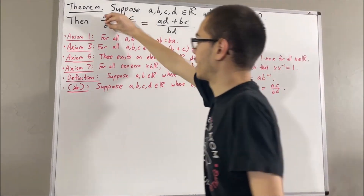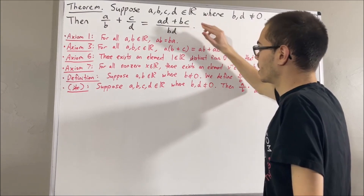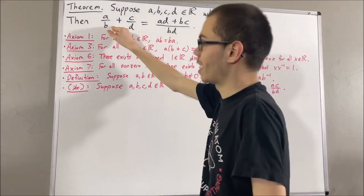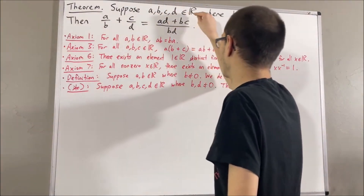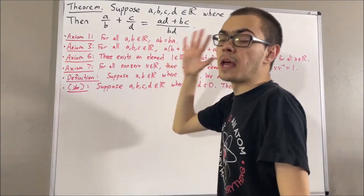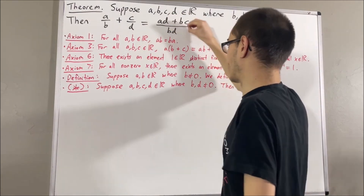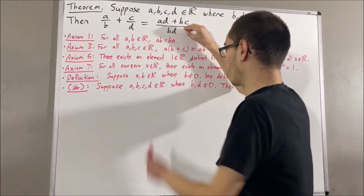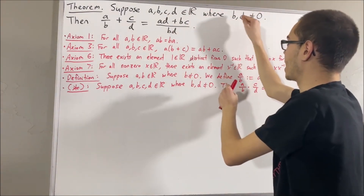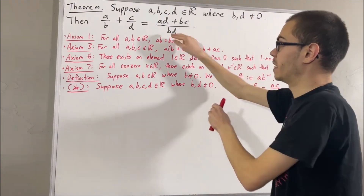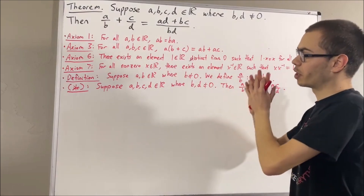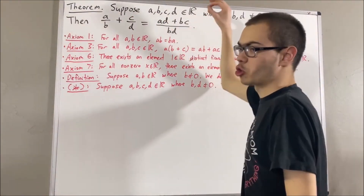Likewise, we're able to make sense out of the main statement as well. Since A and B are real numbers where B is not equal to 0, we can make sense out of A over B. Since C and D are real numbers where D is not equal to 0, we can make sense out of C over D. And we can also make sense out of the right-hand expression, since both the numerator and denominator are real numbers, and since B and D are non-zero, their product B times D is non-zero as well. So now that we know we are able to make sense out of this statement, let's try to prove it.